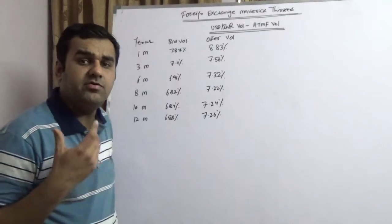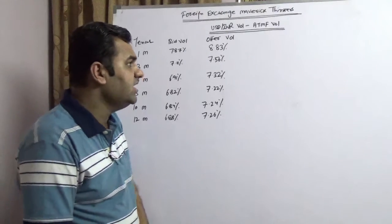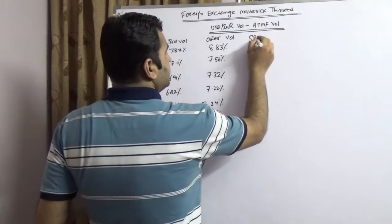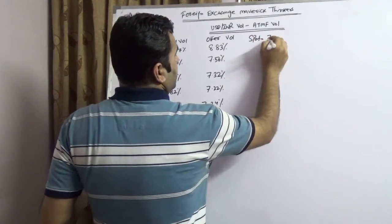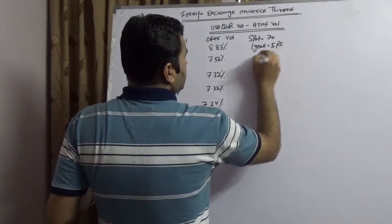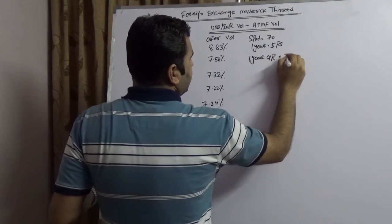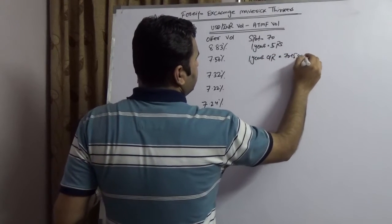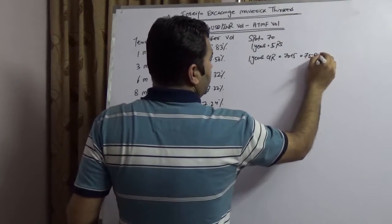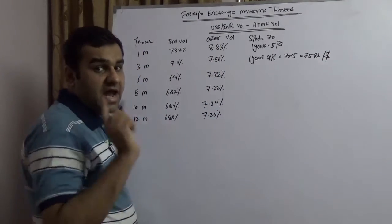Now let me take an example. Assuming today the spot is 70 and one year forward premium is assuming five rupees, so one year outright is 70 plus 5 which is 75 rupees per dollar. This is at the money forward.